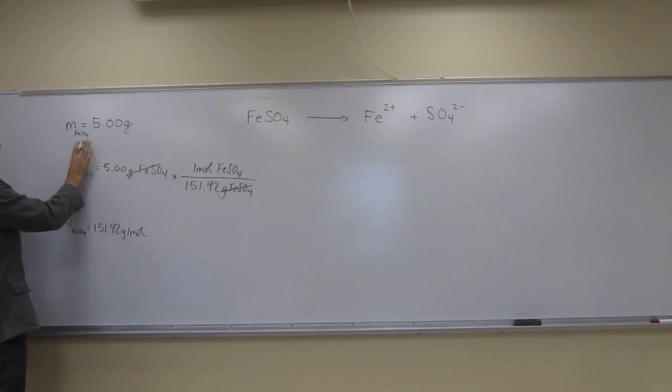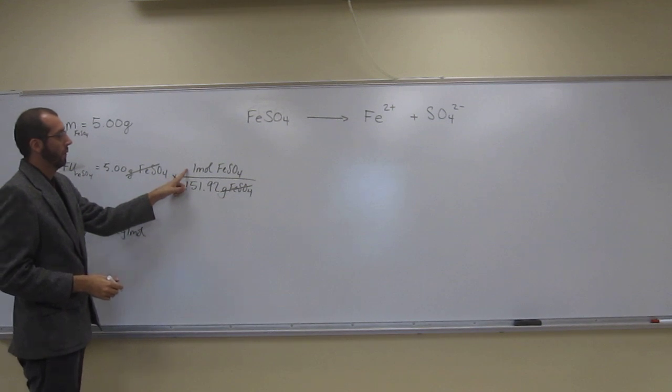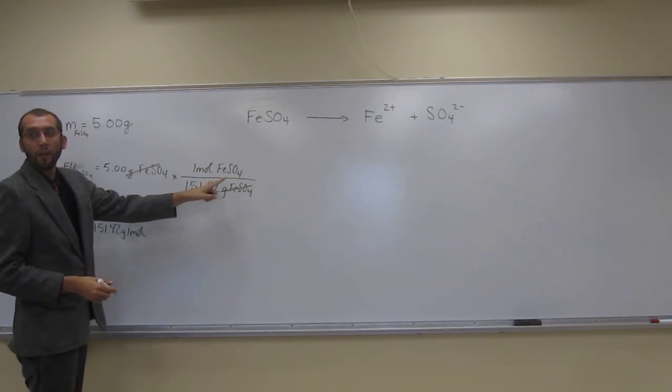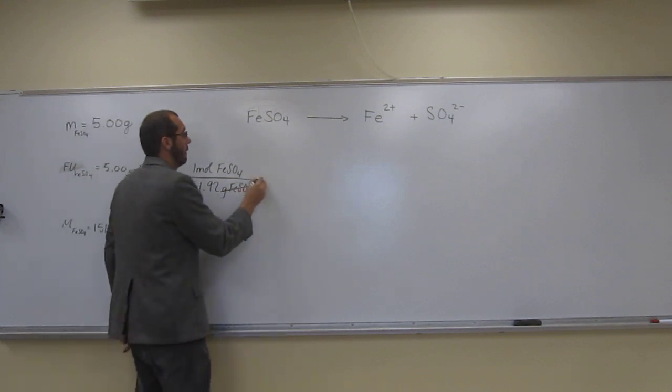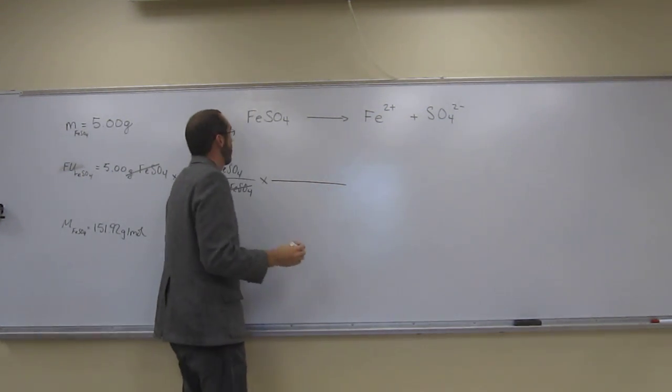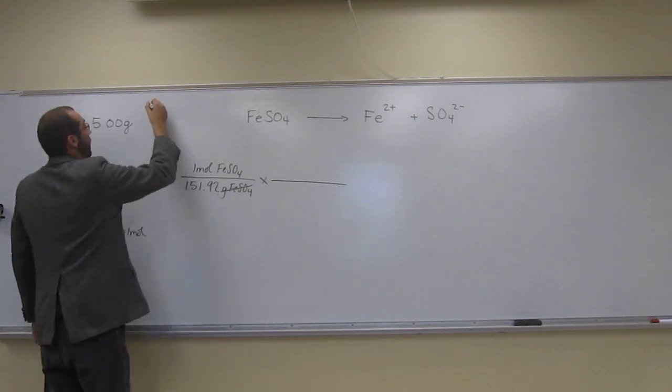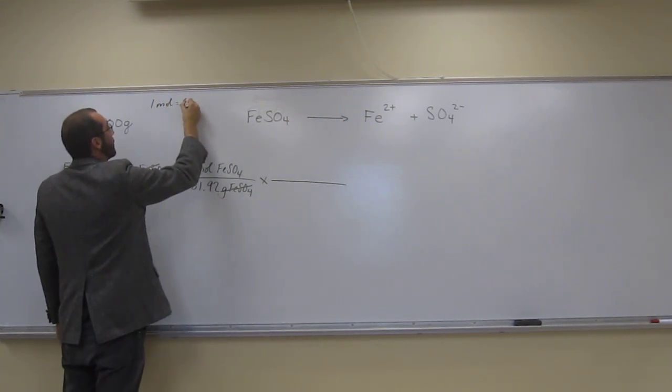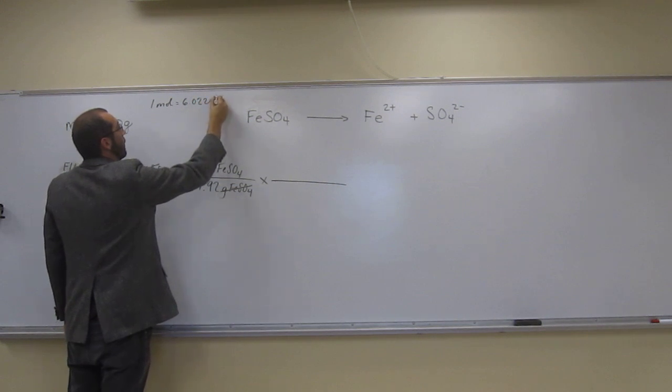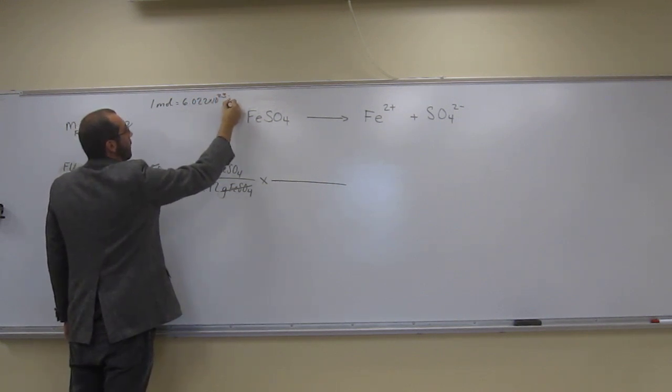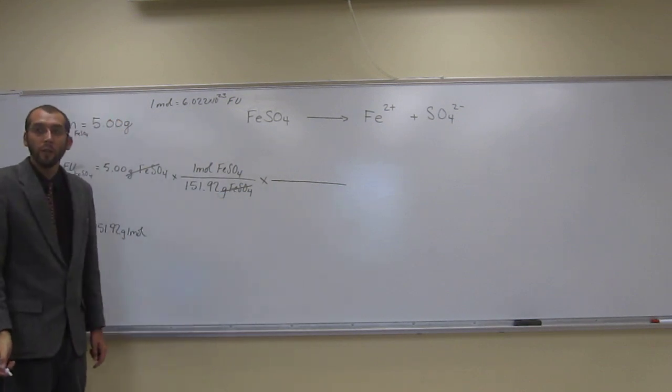But let's look for the number of atoms, or sorry, number of formula units of iron 2 sulfate. So for every one mole of iron 2 sulfate, remember Avogadro's number: one mole equals 6.022 times 10 to the 23rd of anything, in this case formula units.